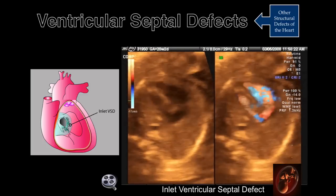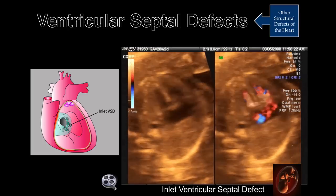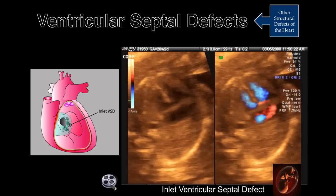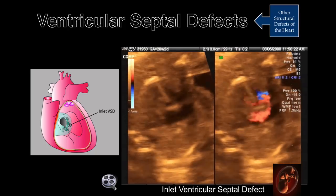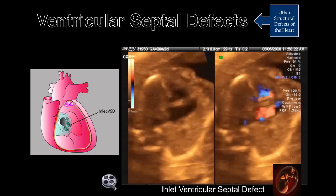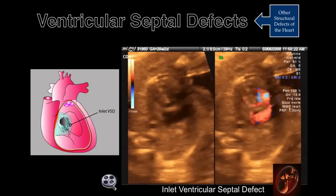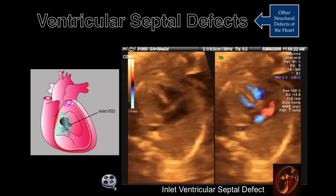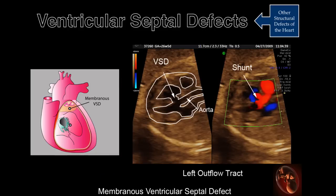This is a cine clip of an inlet ventricular septal defect. Identical images are displayed, one without and one with color Doppler. The color Doppler demonstrates shunting of blood across the septal defect.